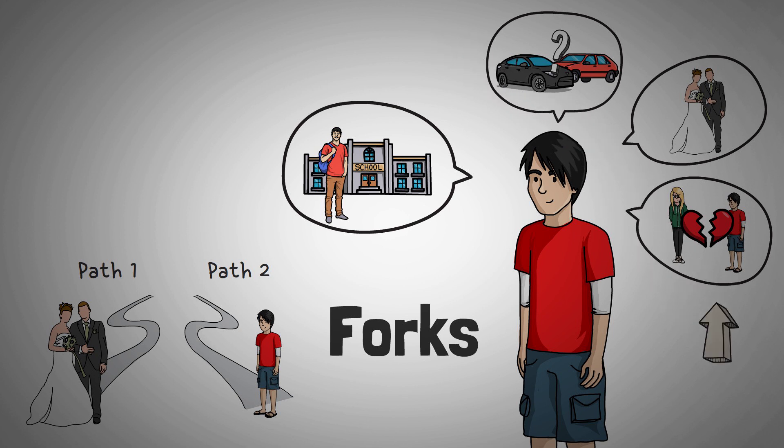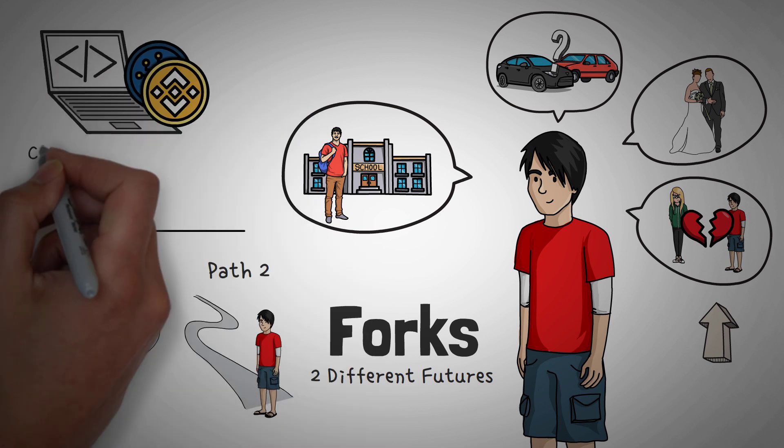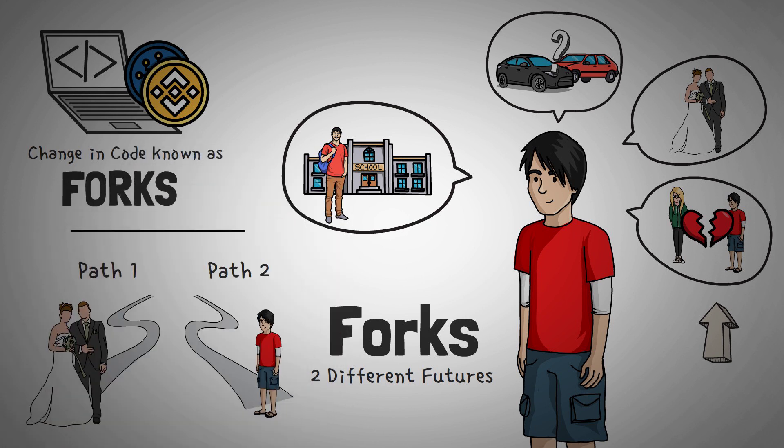When it comes to big decisions like this, you can look at your life as having two different futures. The future is uncertain, so you have to pick very carefully. When it comes to having two futures, there's a concept in crypto and the development world to explain major changes in code. We call these changes forks.